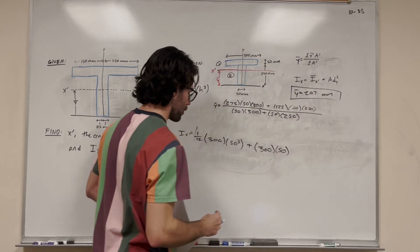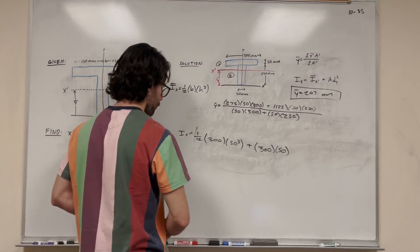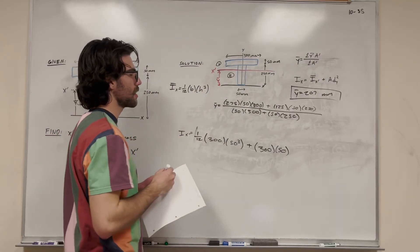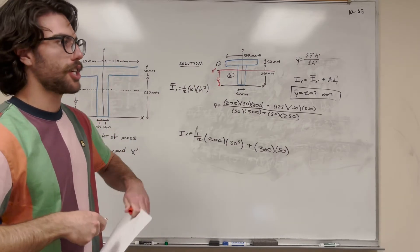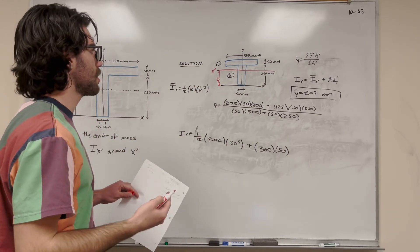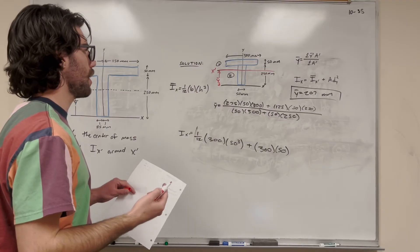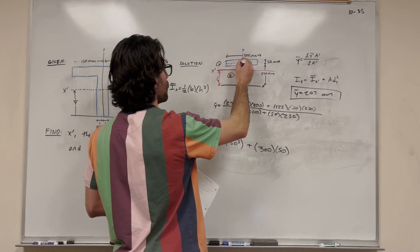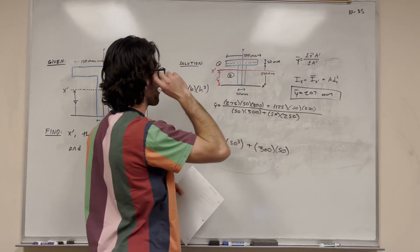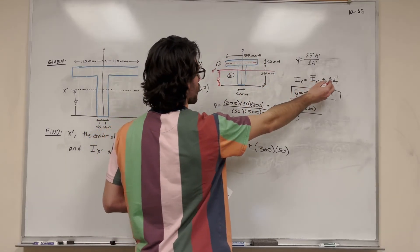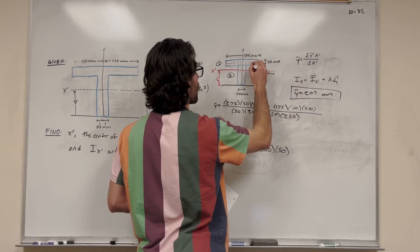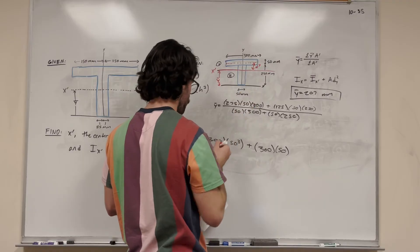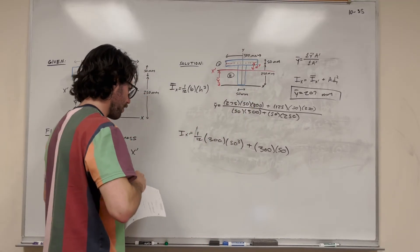And then distance y squared. So what is distance y? We found the center of mass, we found y bar here, which is our x prime axis. So that is the center of mass of our shape. Now we're looking for what's the distance between this axis here and this axis here. So this is the center of mass of shape number 1. So what we're looking for when we're saying distance y is the distance in the y direction from the center of mass of this shape to the center of mass of this shape.